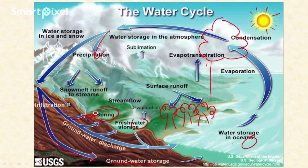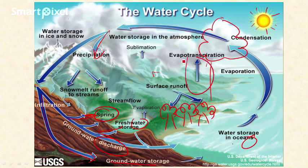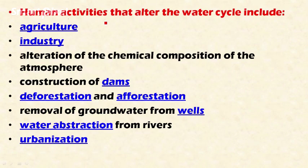Some groundwater flows to springs and into freshwater storage. Some groundwater is also discharged into the ocean. Some snow melts and runs off into streams. All these sources of water again contribute water droplets to the atmosphere through evapotranspiration, and this cycle goes on and on with the help of solar energy.